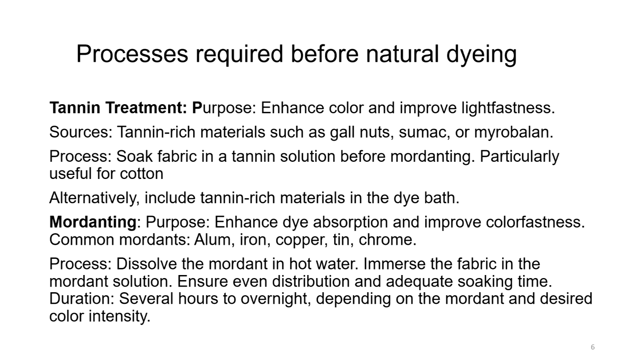The process is to dissolve the mordant in hot water, then immerse the fabric in the mordant solution, ensuring even distribution and adequate soaking time — ranging from several hours to overnight depending on the mordant and desired color intensity. Iron can give very deep colors, so we need not leave it too long; otherwise all colors will appear black. For just mild darkening, one or two hours of iron mordanting is good enough. For alum-mordanted fabric, we can leave it for more than five to six hours or even overnight without harm.